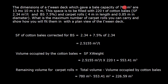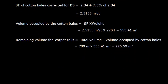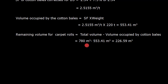So the grain capacity and bale capacity is same but we will take the bale capacity here and this is 780 cubic meters minus 553.41, that is the capacity of cotton bales. So we get this volume.